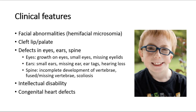For the ears, there may be small ears, also known as microtia, where you can also see in this picture the left ear is smaller compared to the right ear. There may also be missing ears, ear tags, or even hearing loss. For the spine, Goldenhar Syndrome can cause incomplete development of the vertebrae, fused or missing vertebrae, and many people with the syndrome end up with scoliosis, which is curvature of the spine.